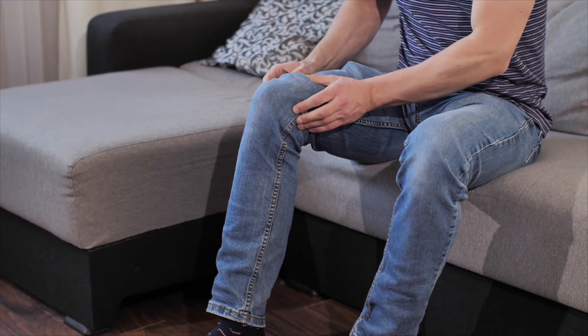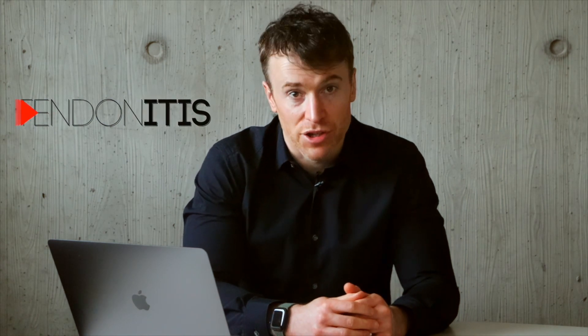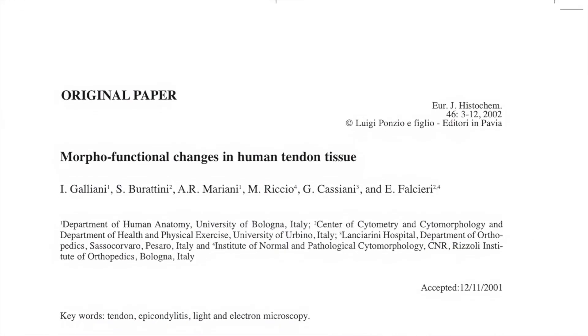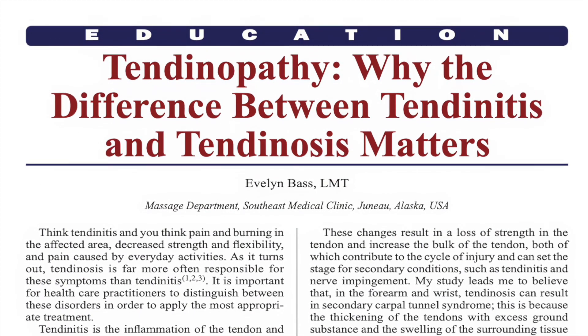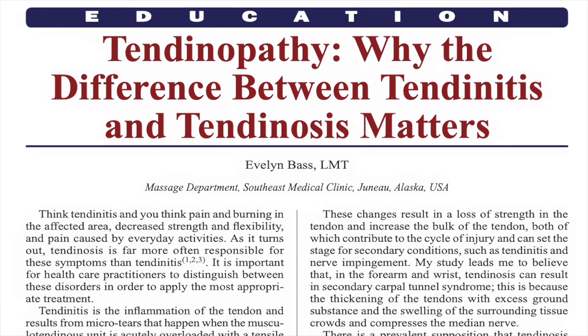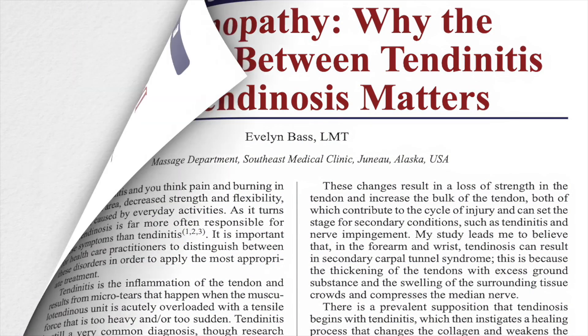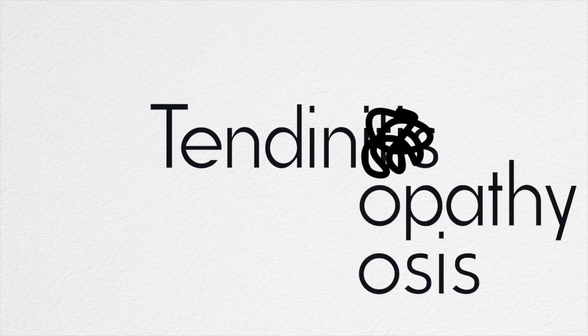Historically, overuse tendinopathy was sometimes referred to as tendonitis. That '-itis' suffix implied that inflammation was central to the pathological process. But during the 1990s, surgical biopsies from ruptured and symptomatic tendons revealed that the pathophysiology underlying most cases actually involved very few inflammatory cells, and that the condition was actually due to a failed healing response within the tendon tissue. As a result, the prevailing view became that tendinopathy was essentially a degenerative condition caused by repeated mechanical loading and not an inflammatory condition. The term tendinitis fell out of favor and the terms tendinopathy and tendinosis became more commonly used.